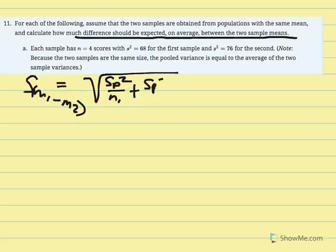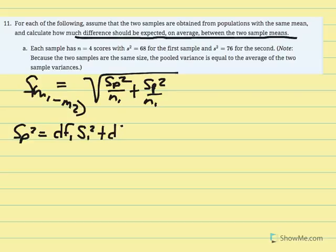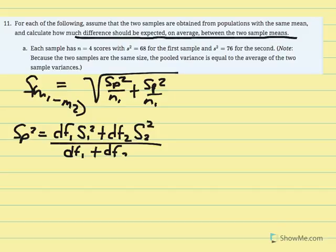The alternate pooled variance equation equals degrees of freedom 1 multiplied by variance 1, added to degrees of freedom 2 multiplied by variance 2, all over degrees of freedom 1 plus degrees of freedom 2. The other equation was SS1 plus SS2 over degrees of freedom 1 plus degrees of freedom 2, but since they gave us variance we use this equation instead.